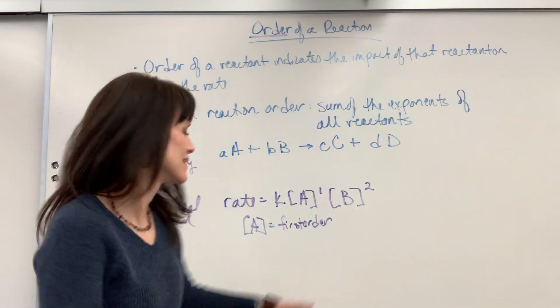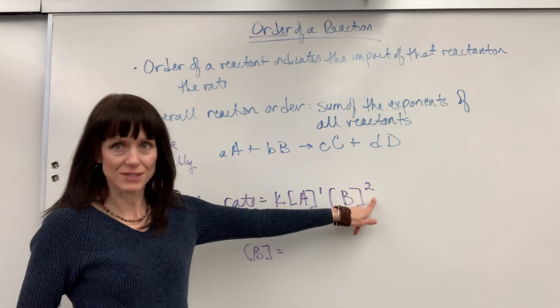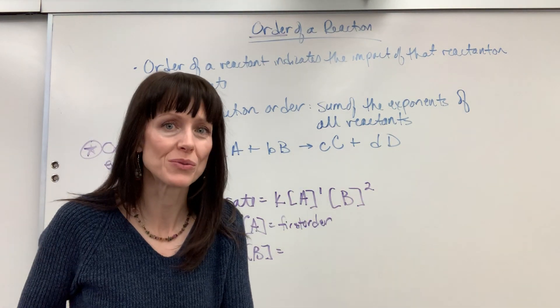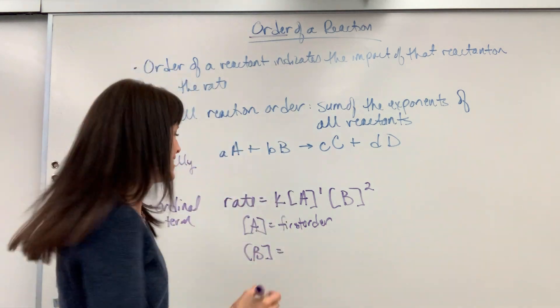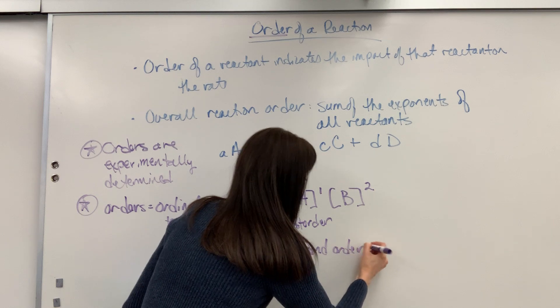What order is B? The concentration of B is, it's two. So put it in the ordinal word, first, second. It is a second order. Second order.